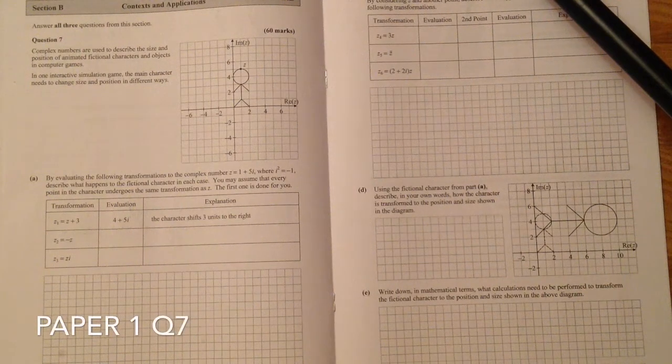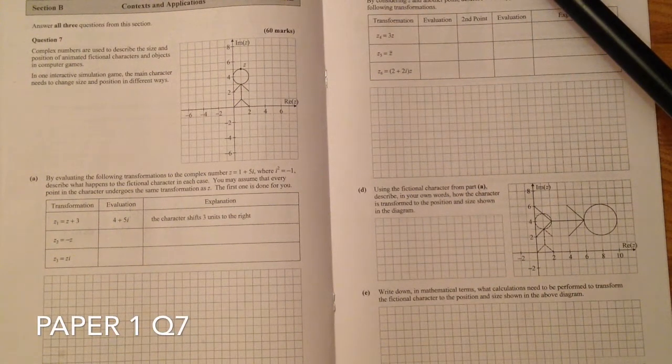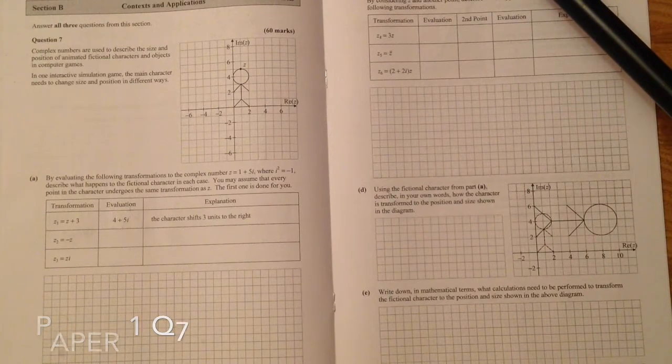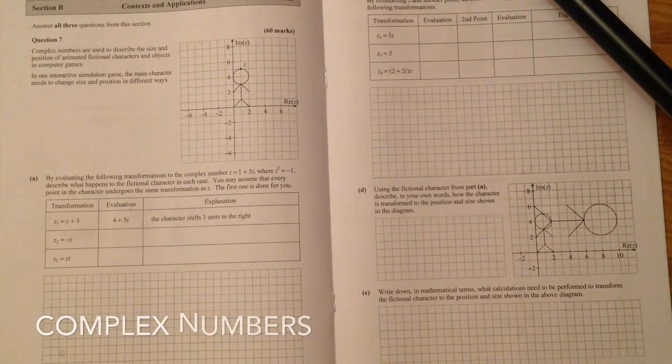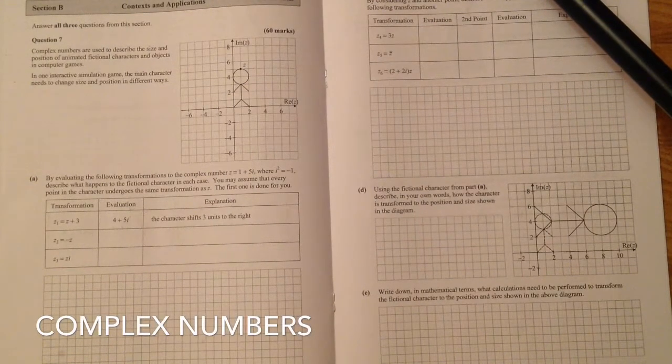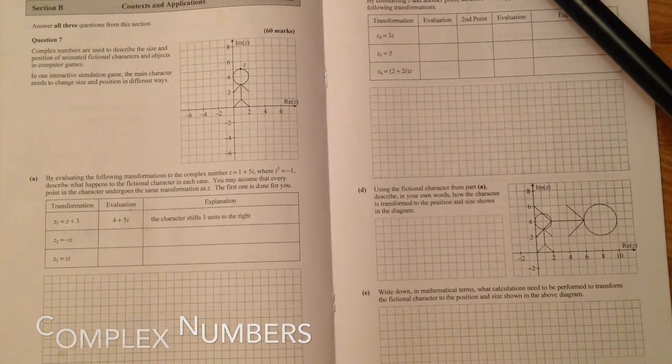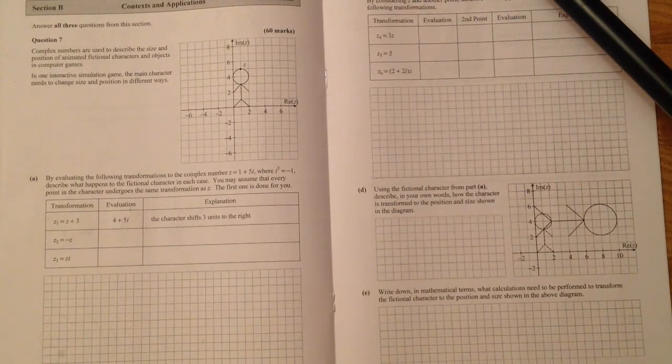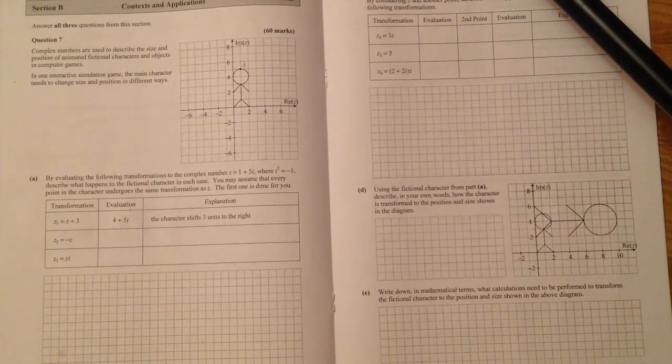This is question 7, paper 1. It's a complex numbers question. It says, complex numbers are used to describe the size and position of animated fictional characters and objects in computer games. In one interactive simulation game, the main character needs to change size and position in different ways.